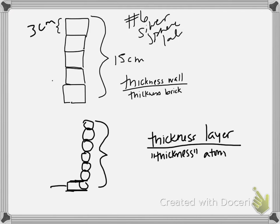Now, is it necessarily going to be a whole number? No, not necessarily, because it's an average. In some places that layer might be 20 atoms thick, in some places it might be 5 atoms thick. So you're going to get an average number, and it will not necessarily be a whole number. Any other questions, comments, or concerns on that one?